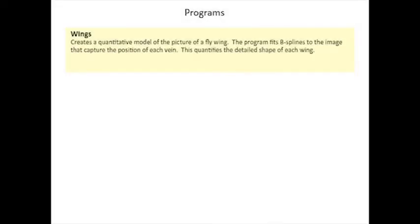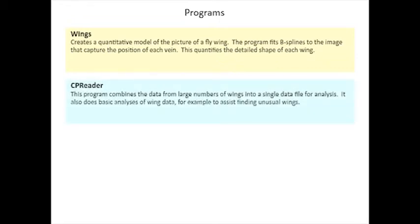WINGS can be used to measure individual wings, for example, if you want to decide whether a fly is suitable during a selection experiment, or to measure a batch of hundreds or thousands of wings. We also use the program CPREADER to read the wing information for later analysis. This program combines the data from large numbers of wings into a single data file for analysis. It also does basic analysis of wing data, for example, to assist in finding unusual wings.